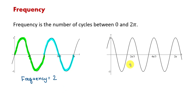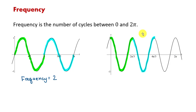How about the second example? Here the first cycle starts at the maximum point and ends at the next maximum — that's cycle one. Cycle two follows, and I can fit in one more until I reach two pi — cycle three. I was able to fit in three cycles between zero and two pi, so the frequency of this graph is three.